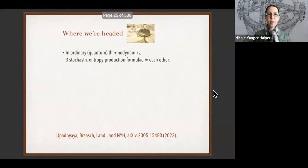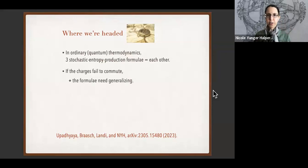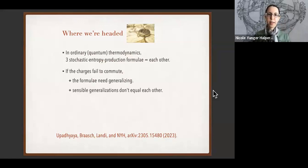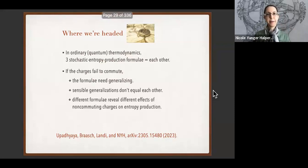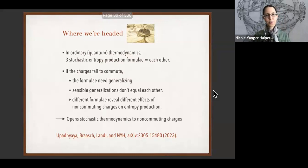Here's where I'd like to go: first I'll review how in conventional thermodynamics we have three common formulae for entropy production — these formulae equal each other. If the charges fail to commute, we need to generalize these formulae. We can generalize them in a reasonable way so they satisfy several sanity checks, but these sensible generalizations don't equal each other. Furthermore, different formulae reveal different physical insights. This work opens the door of stochastic thermodynamics to non-commuting charges.